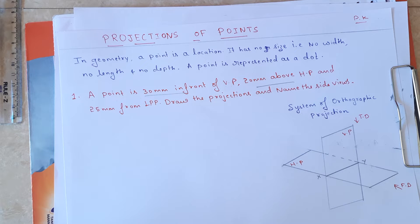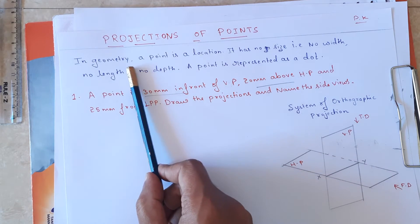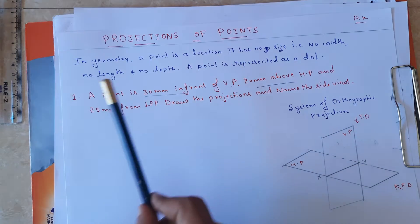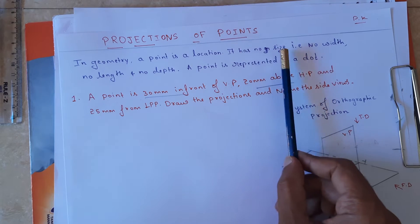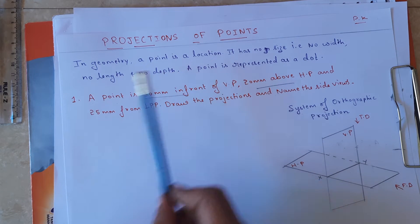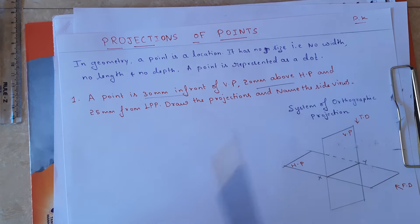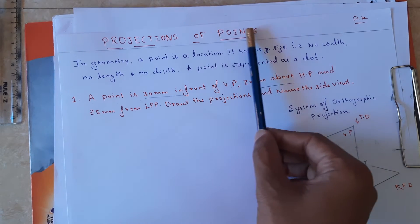Hello friends, namaste, welcome to the class on projections of points. What is the meaning of points in geometry? A point is a location — it has no size, that is no width, no length, and no depth. A point is represented as a dot. Now let us see how to solve the problems on projections of points.